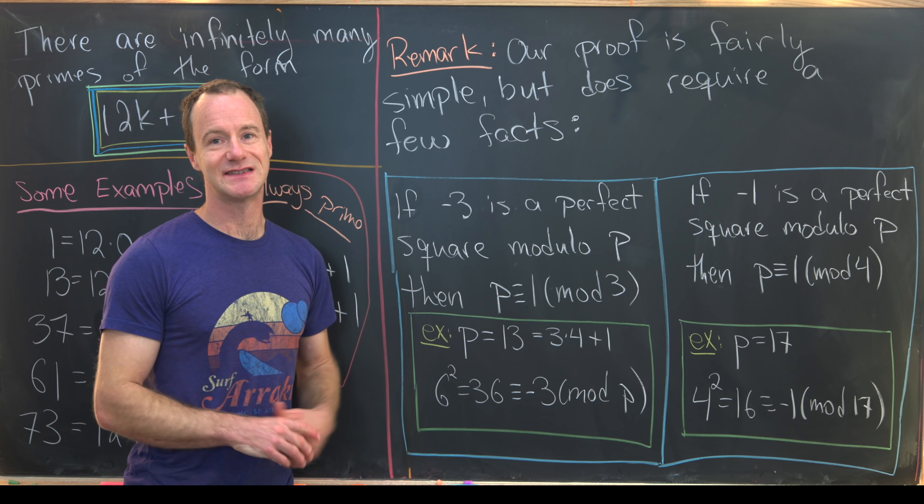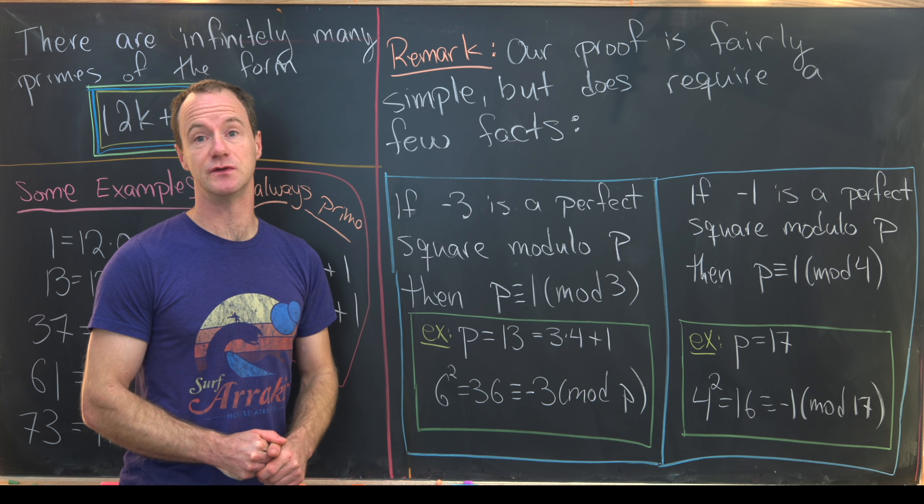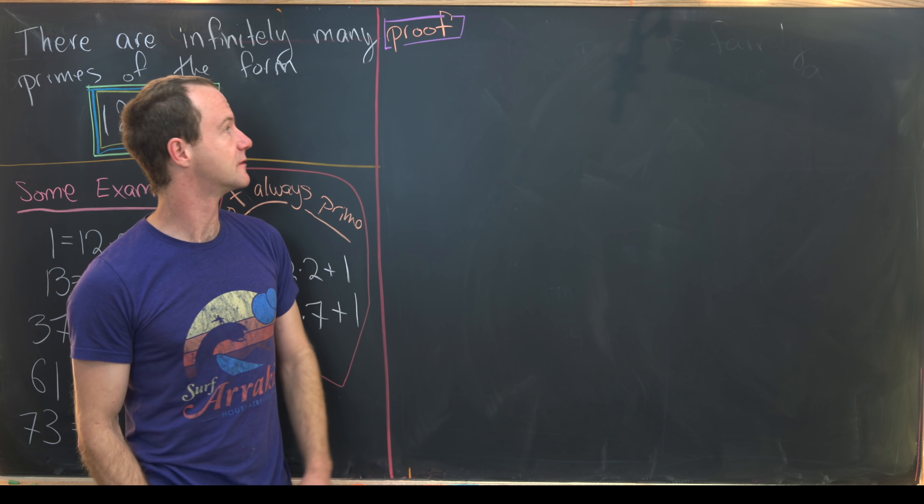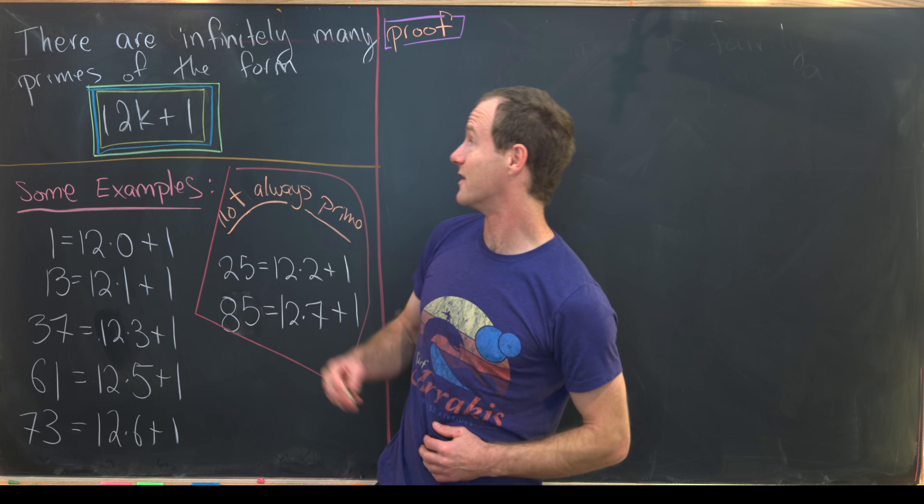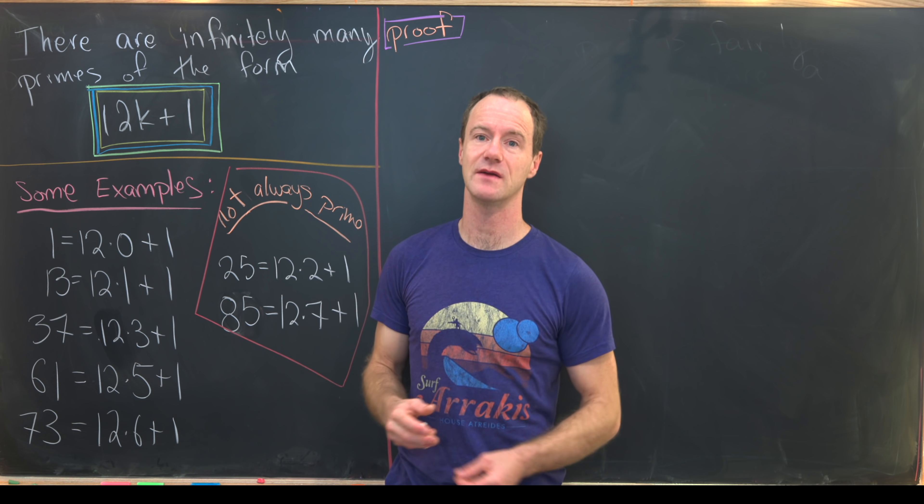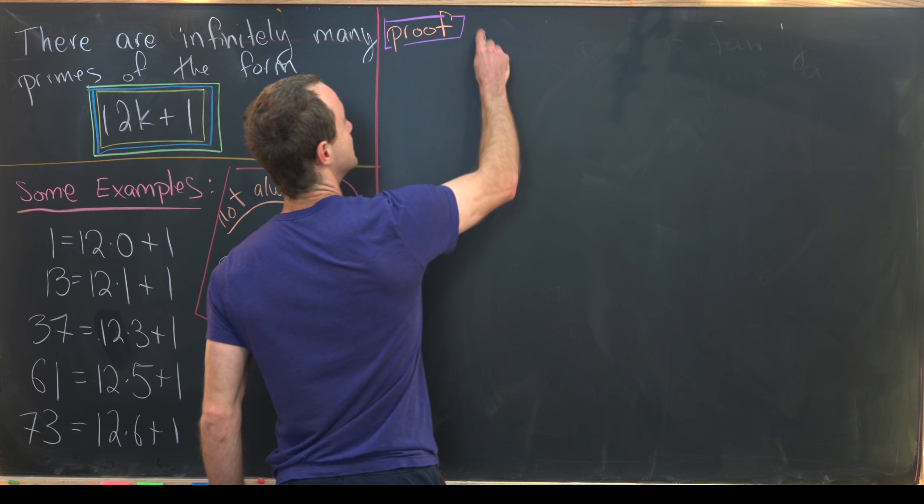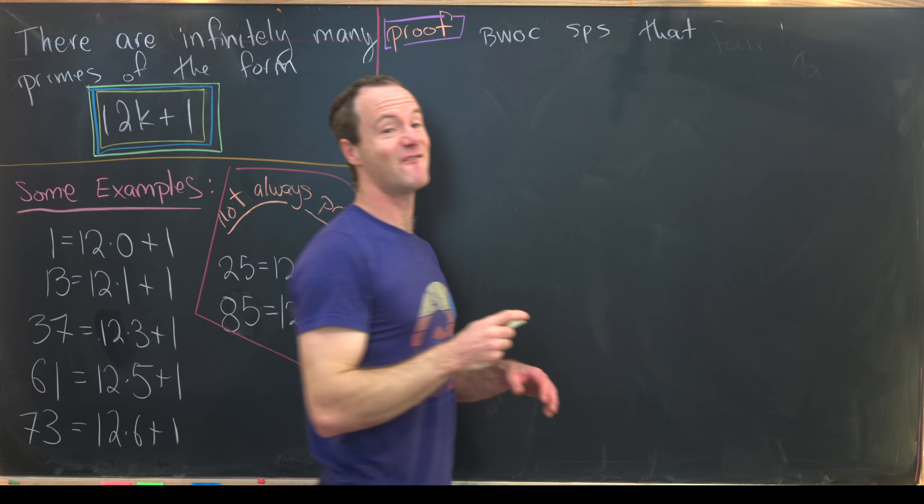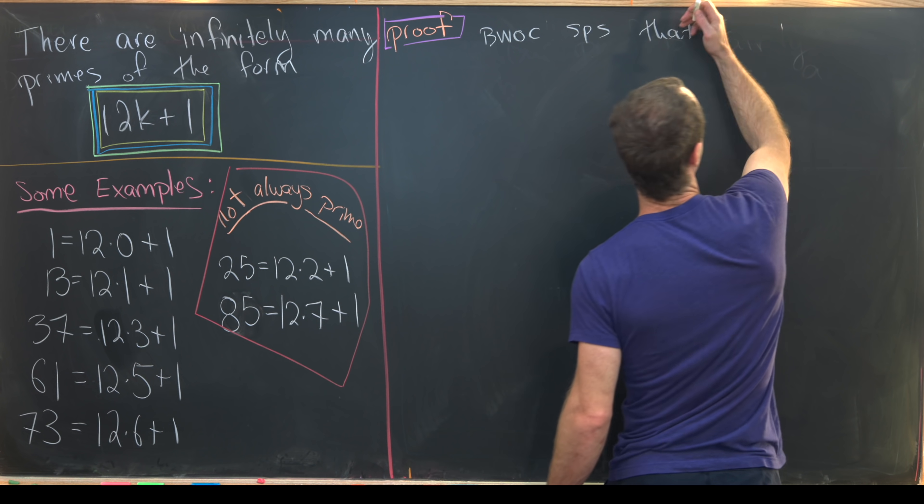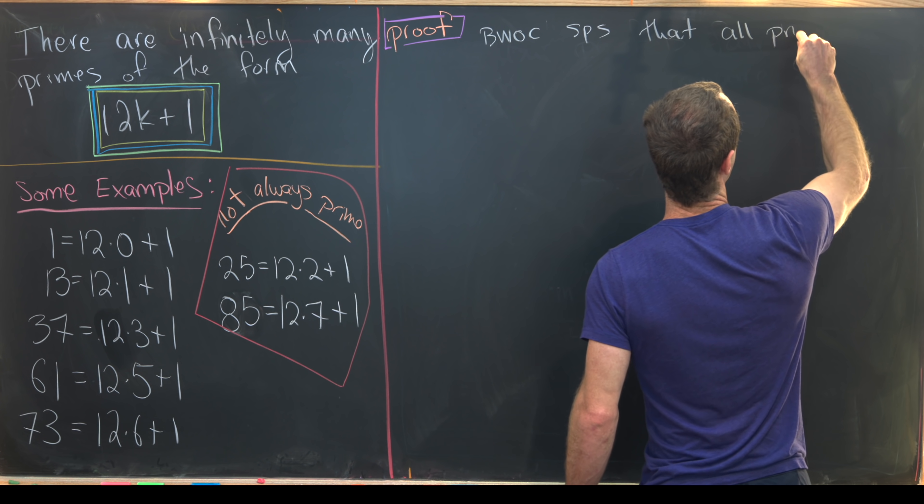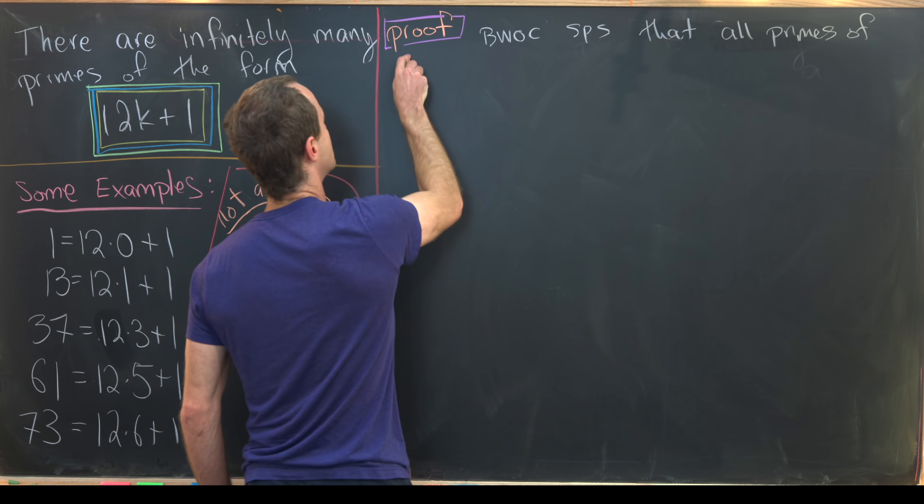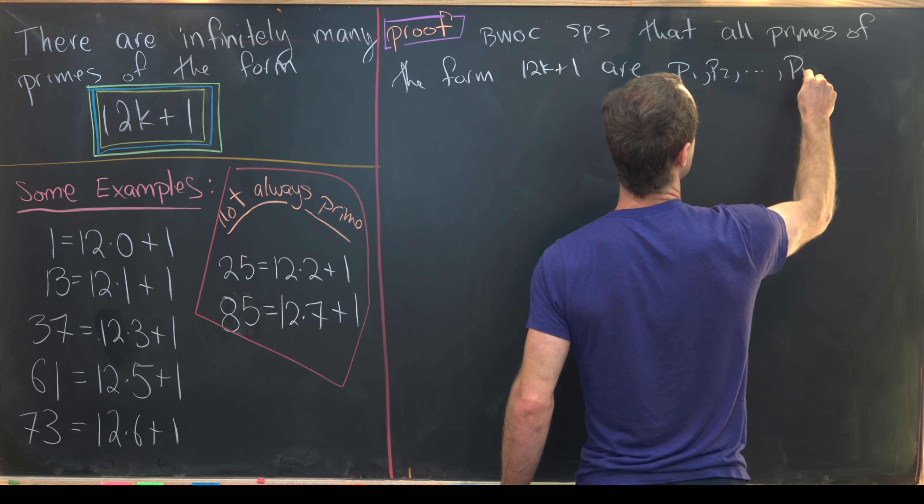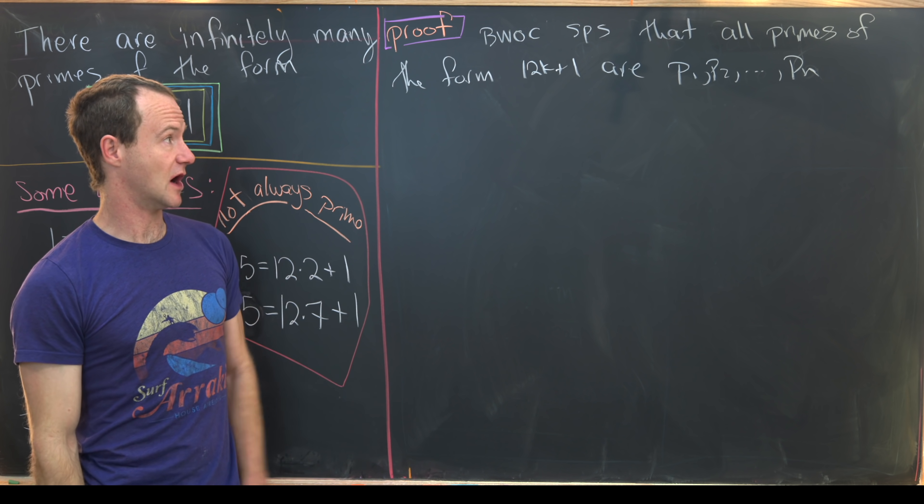So now that we've set up the problem along with facts that we'll use, let's dive into the proof. Now that we've provided some background along with a couple of facts, let's jump into the proof. And so just like we do with a lot of different infinitely many primes of the form type proofs, we're going to do this by way of contradiction. So let's by way of contradiction, suppose that there are only finitely many primes of this form. So we can write that as follows that all primes of the form 12k plus 1 are on this list p1, p2 up to pn. So there are only n primes of this form.